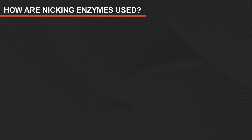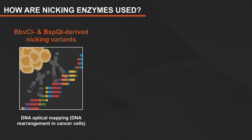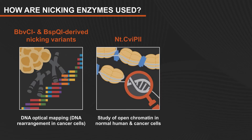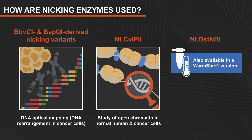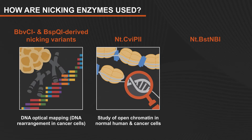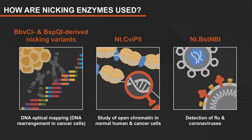Nicking enzymes are used in a variety of applications. For example, BBVC1 and BSPQ1-derived nicking variants have been used in DNA optical mapping to study chromosome DNA rearrangement in cancer cells. NT-CVIP2 has been used in the study of open chromatin in normal human and cancer cells. NT-BSTNB1, which is also available in a warm-start version, has been useful in the detection of flu and coronaviruses.